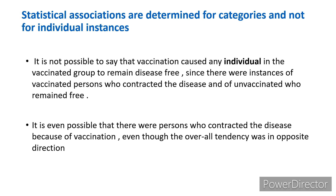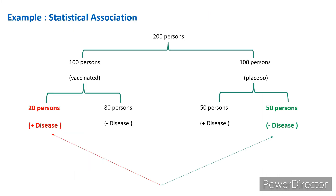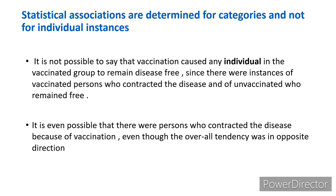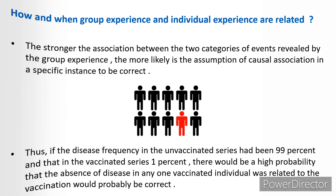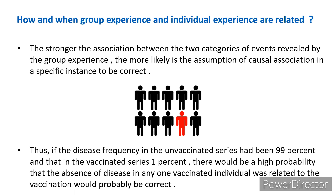It is even possible to say there were persons who contracted disease because of vaccination — those 20 vaccinated persons who still developed disease — even though the overall tendency was in the opposite direction. How and when group experience and individual experience are related: the stronger the association between the two categories of events revealed by group experience, the more likely is the assumption of a causal association in a specific instance to be correct.